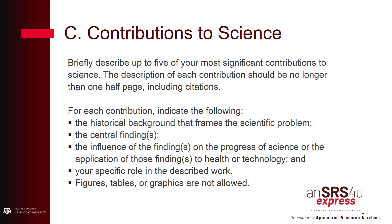For Section C, Contribution to Science, briefly describe up to five of your most significant contributions to science. The description of each contribution should be no longer than one half page, including citations. For each contribution, you may cite up to four publications or research products that are relevant to the contribution. If you are not the author of the product, indicate what your role or contribution was.